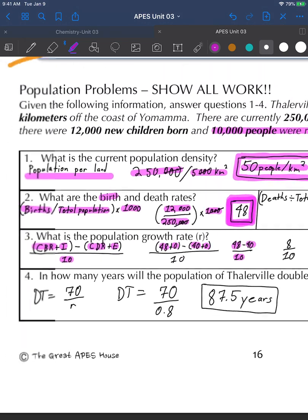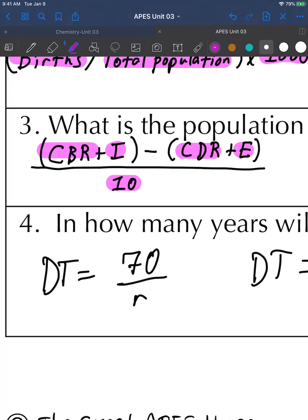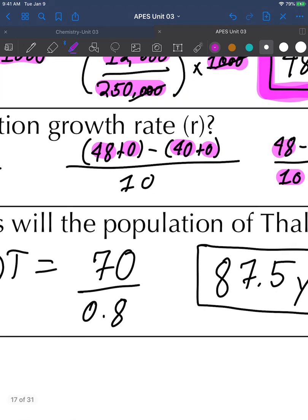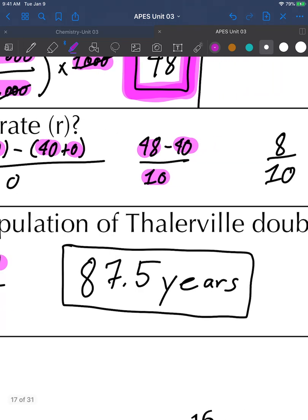How long will it take the population to double? Our formula DT, doubling time, is 70 divided by your growth rate. 70 doesn't change, it's a constant, and our growth rate was 0.8. Doubling time is 87.5 years.